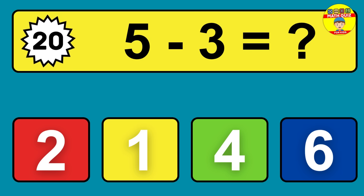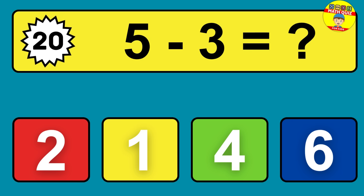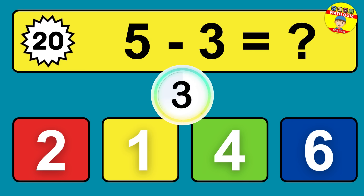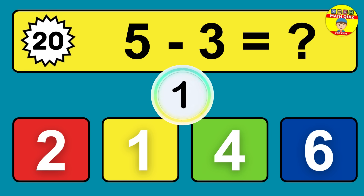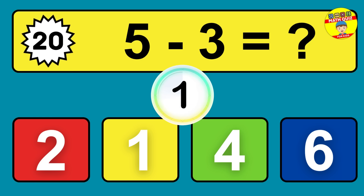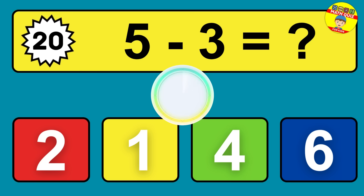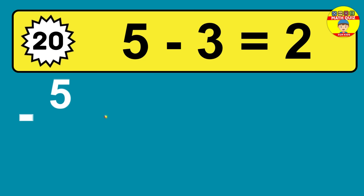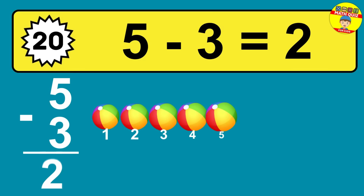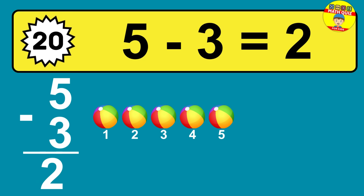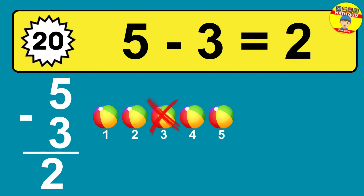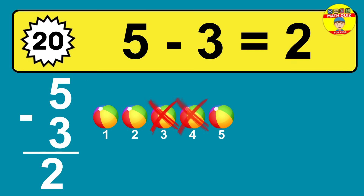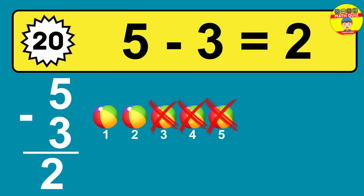Question 20: 5 minus 3 equals what? So the answer is 5 minus 3 is 2. Let's count it: 1, 2.